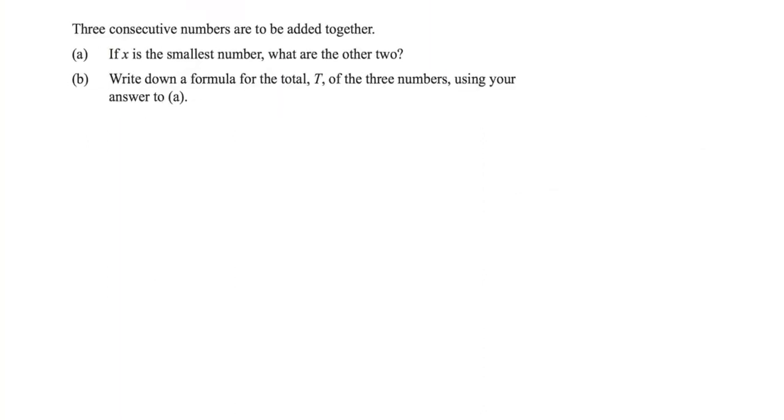Three consecutive numbers are to be added together. If X is the smallest number, what are the other two? Well, consecutive means one after another. For example, 4 and 5 are consecutive numbers because they're next to each other. So if we're thinking about three numbers and the first one is X, well, the next one is going to be X plus 1, if X is the smallest. The next one after that would be adding another one on the end, X plus 2. So here are three consecutive numbers, X, X plus 1, and X plus 2.